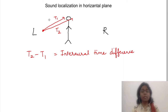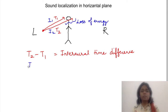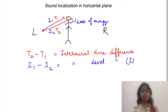Similarly, the intensity or loudness of the sound which reaches both ears will also vary, because there will be some loss of energy along the longer path. This difference in intensity of sound reaching both ears is known as inter-aural level difference, or inter-aural intensity difference.